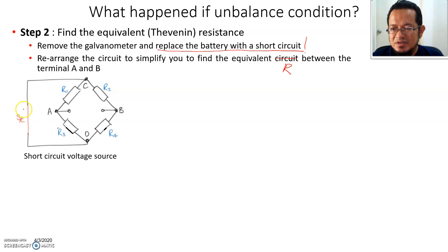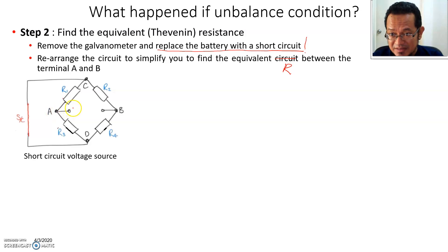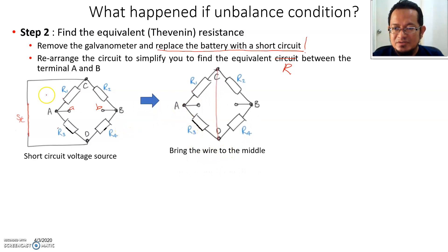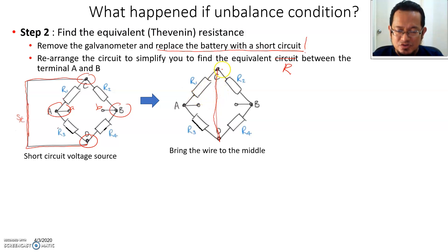Before this, remember you have a voltage source. First, you remove the galvanometer — it's gone. Then you short the voltage source, so you have only resistors and wire. Don't forget terminal A and B. Then you bring the wire together; you can bring the lines to the middle — it doesn't change the circuit. You can see you have four nodes. For easy visualization, you put the wire in the middle and bring terminals A and B outwards.